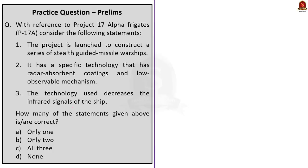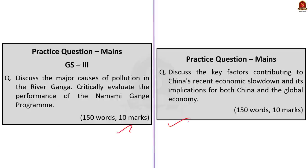The last question is based on our Project 17A discussion. Three statements are given. Statement one: the project is launched to construct a series of stealth guided missile warships — correct. Statement two: it has a specific technology with radar-absorbent coatings and low observable mechanism — also correct. Statement three: the technology used decreases the infrared signals of the ship — also correct. Since all statements are correct, the answer is option C: all three.